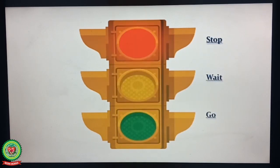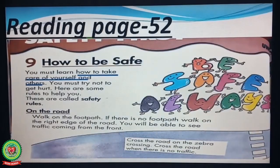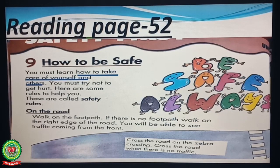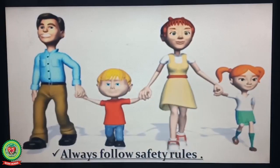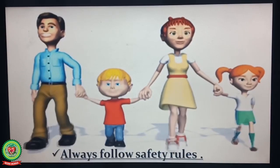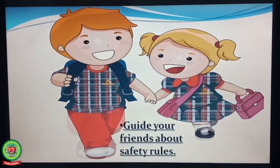Now children, open your science book, Unit: Safety First, Lesson 9: How to be Safe, page number 52, and let's start reading. You must learn how to take care of yourself and others. One question arises: how to take care of yourself and others? The answer is: always follow safety rules and guide your friends about safety rules.